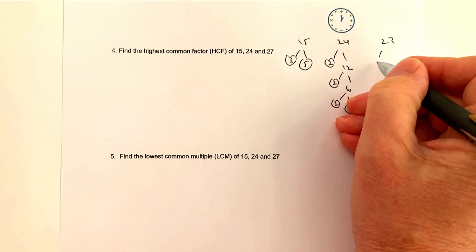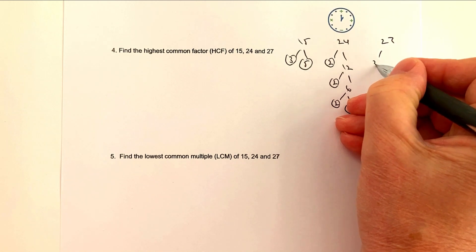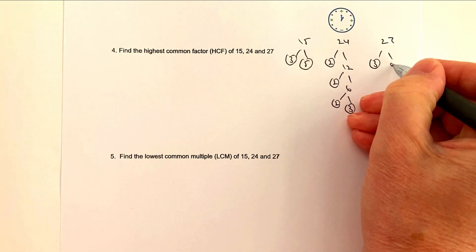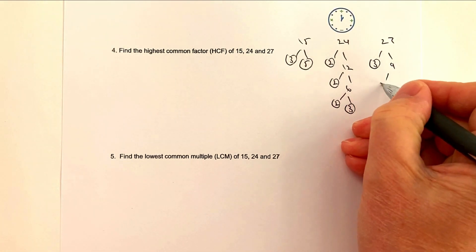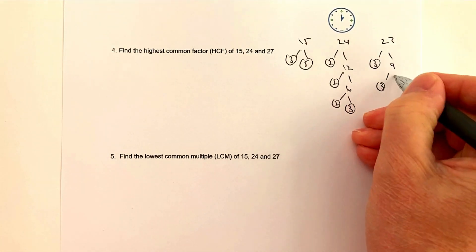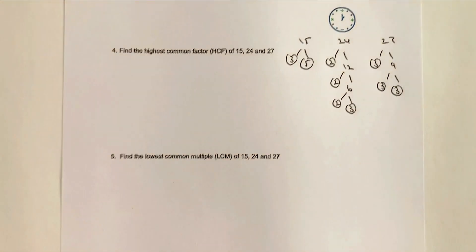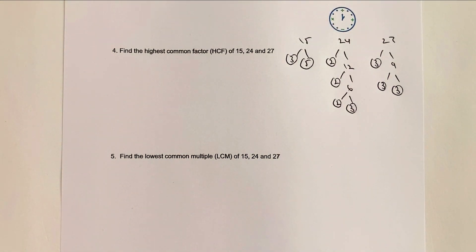For 27: 2 doesn't go into it, but 3 does — 3 × 9, then 3 × 3. So 27 = 3 × 3 × 3. Check: 3 × 3 = 9, × 3 = 27. Correct.